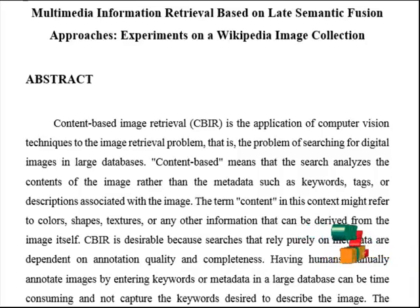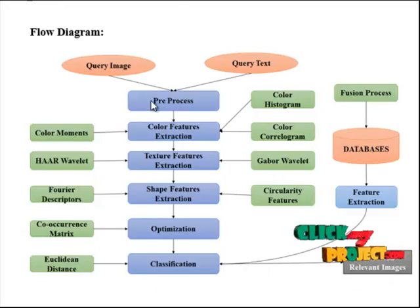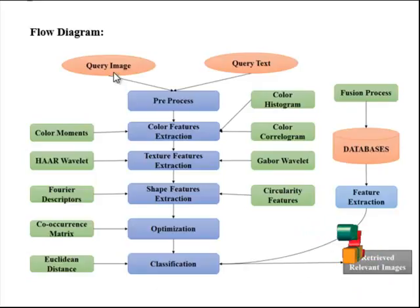The extracted features are then optimized by co-occurrence matrix. Features are optimized and approximated to relevant features. These features are finally classified with similarity computation using Euclidean distance so as to retrieve the relevant images from the database.